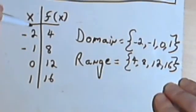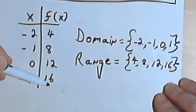Domain is all of the input values, range is all of the output values.